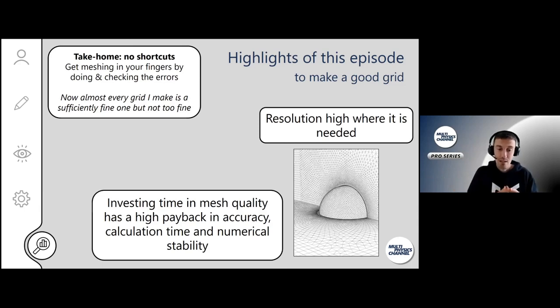For myself, I did a lot of these things. Now almost every grid I make is sufficiently fine—it's not too fine to compromise computational cost, but it's sufficiently fine for accuracy, just on the fly based on my experience. This makes it easy to do good and easy meshing.